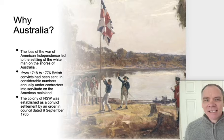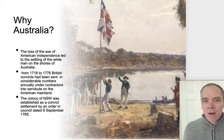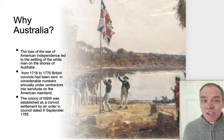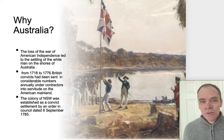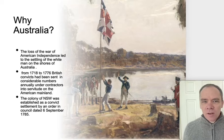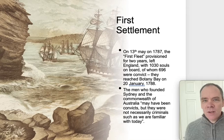So why Australia? The loss of the War of American Independence led to the settling of the white man on the shores of Australia. From 1718 to 1776, British convicts had been sent in considerable numbers annually into servitude in the American mainland. The colony of New South Wales was established as a convict settlement by an order in council dated the 6th of September 1785.